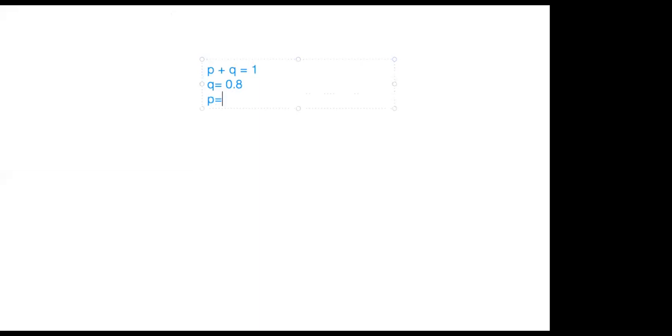All you really need to know is that P plus Q equals one. We know in our equation we were given Q equals 0.8, and we want to solve for P. So we can walk through the entirety of this math question on the whiteboard, the same way that we would do it on the board in the classroom. We can solve: P plus 0.8 equals one, so P equals 0.2.